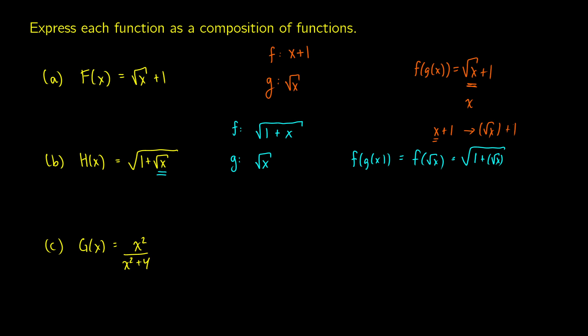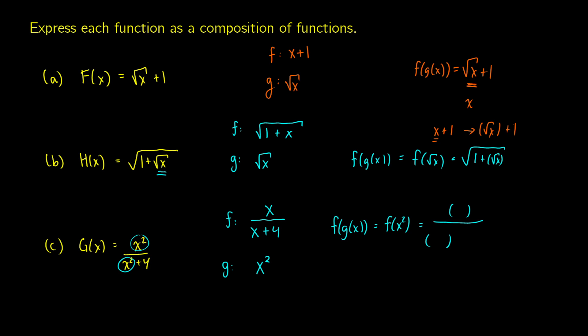The next example looks more complicated because we have x squared terms in a numerator and denominator. But noticing the same x squared on top and bottom, the idea is to start with a skeleton function f of x equals x over x plus 4, then replace all x's with x squared by setting g of x equals x squared. So f of g of x gives us x squared over x squared plus 4. The g function is the replacement and the f function is the skeleton.